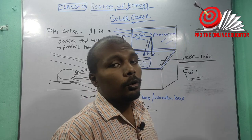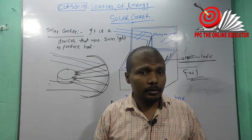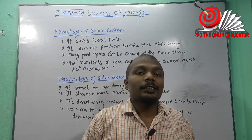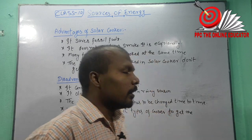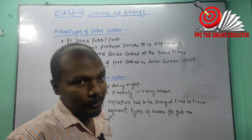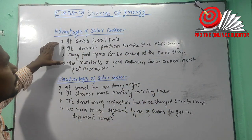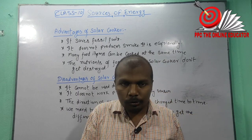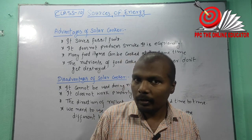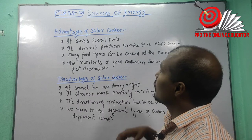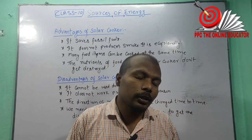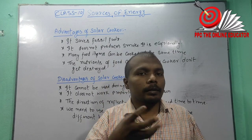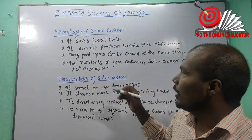Now let's discuss the advantages and disadvantages of a solar cooker. First advantage: it saves fossil fuel — we don't need to use wood, coal, or natural gas. Second advantage: it doesn't produce smoke, hence it is eco-friendly. The solar cooker creates no smoke or pollution, which is very good.